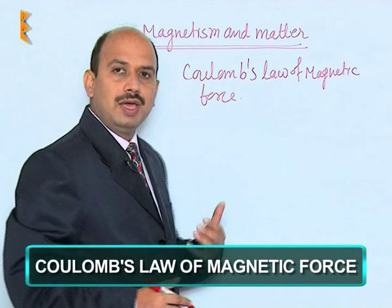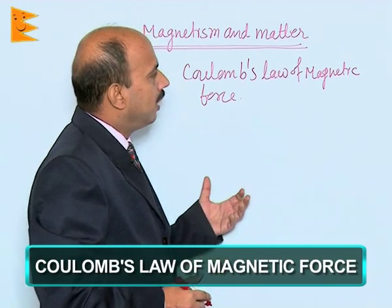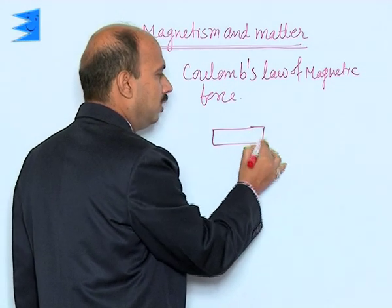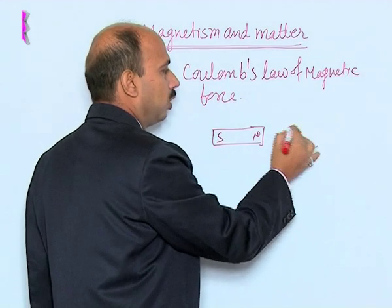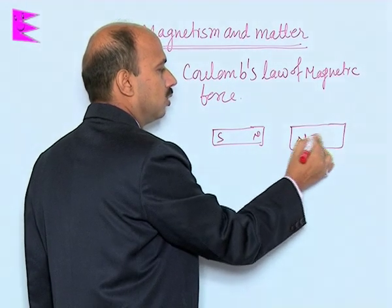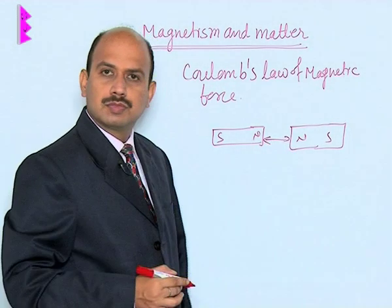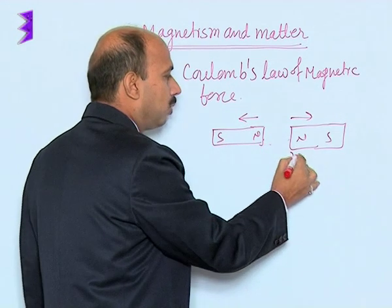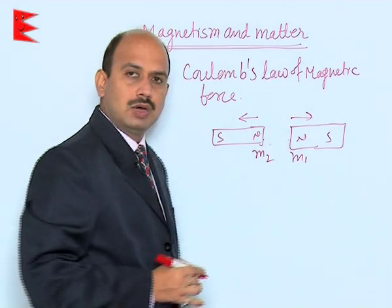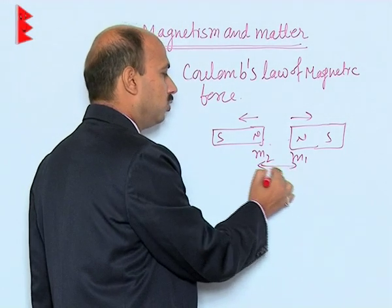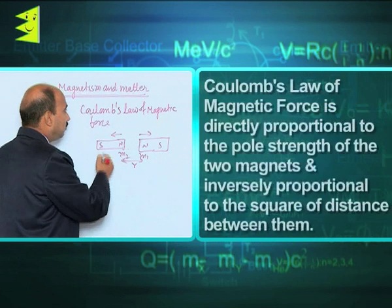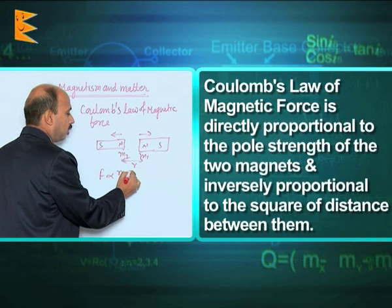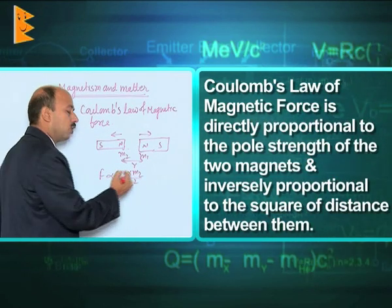Now, Coulomb's law of magnetic force — we have done Coulomb's law of electrostatic force; similarly, here we define Coulomb's law of magnetic force. Suppose you have two bar magnets: one has a north pole and the other has a north pole facing it — these will repel each other. Suppose one has pole strength m₁ and the other has pole strength m₂, separated by a distance R. Then the magnetic force is directly proportional to the pole strengths of the two poles and inversely proportional to the square of the distance between them.